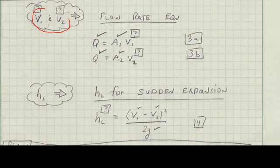To find velocity at 1 and velocity at 2, apply the flow rate equation twice, as shown here.